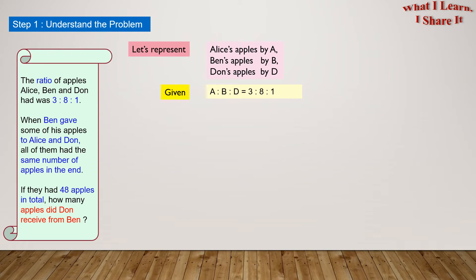When Ben gives some apples to Alice and Don, all of them had the same number of apples in the end. So we can write, when Ben gave some apples to Alice and Don, A equals to B equals to D.